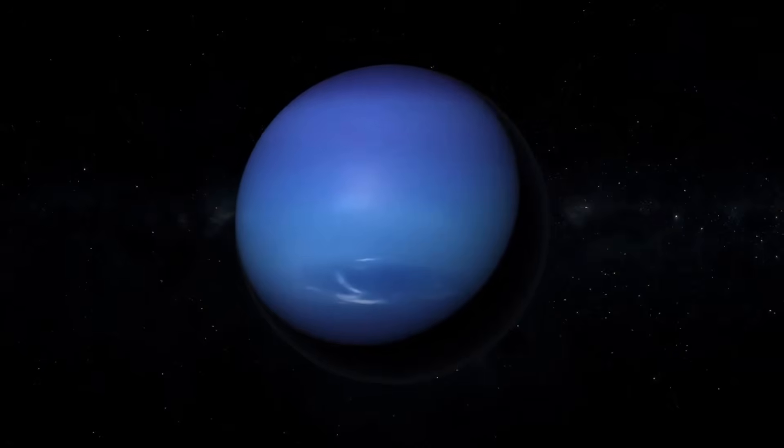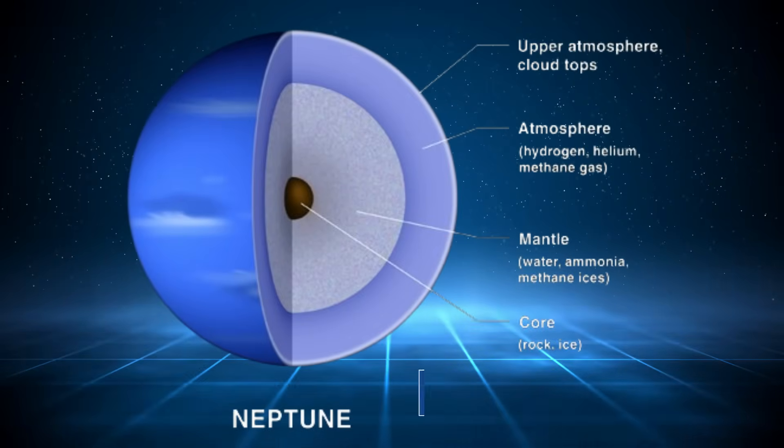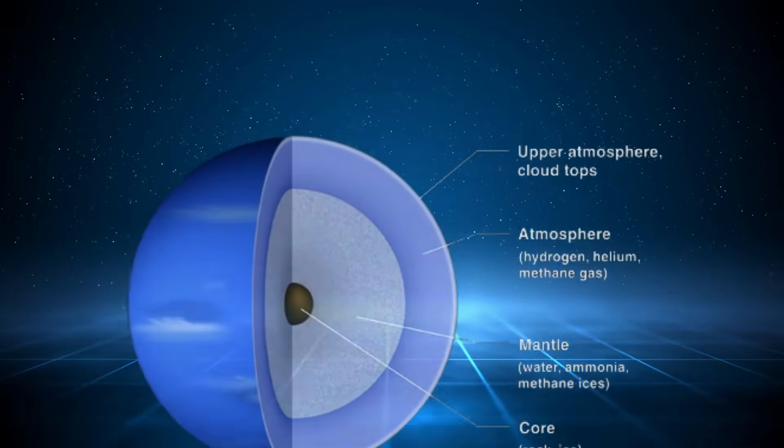Rather than being a uniform ball of hydrogen, helium, and some methane, Neptune appears to house far more complex structures within its core and atmospheric layers.